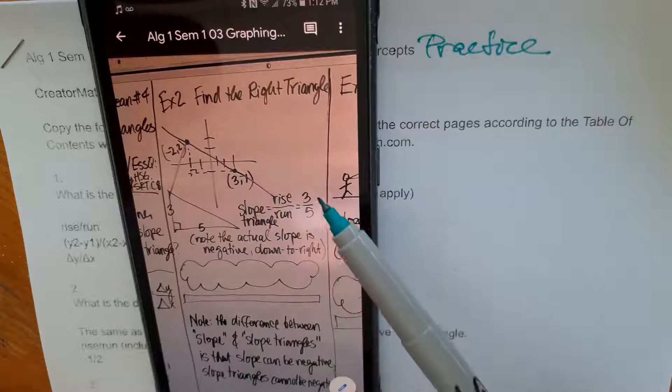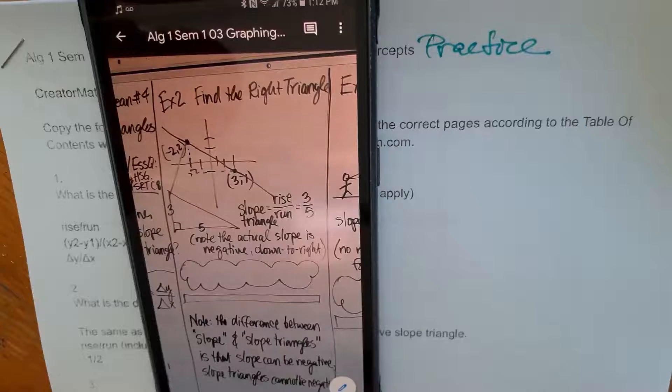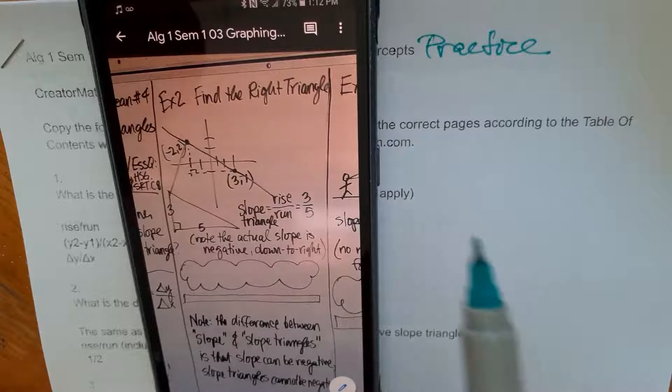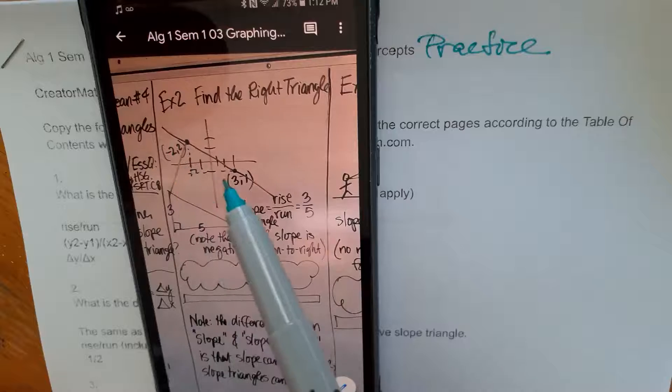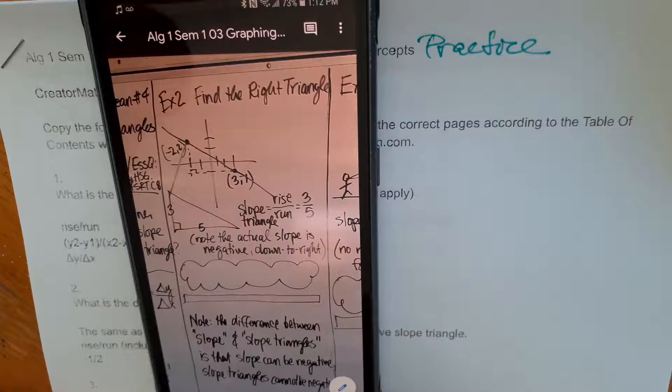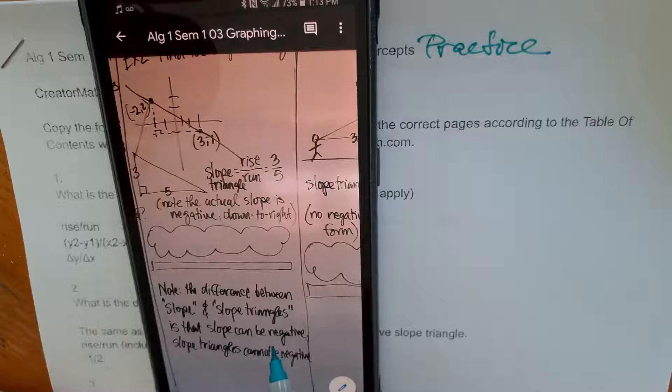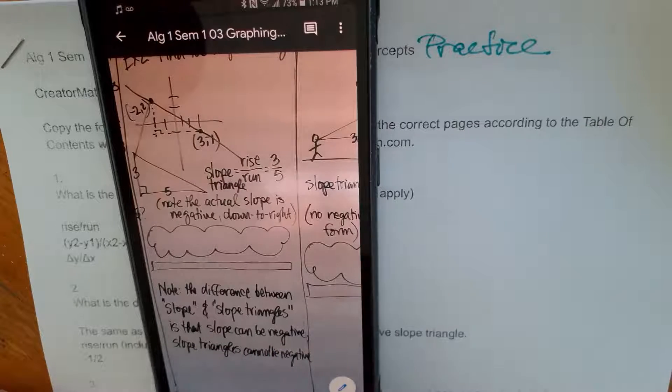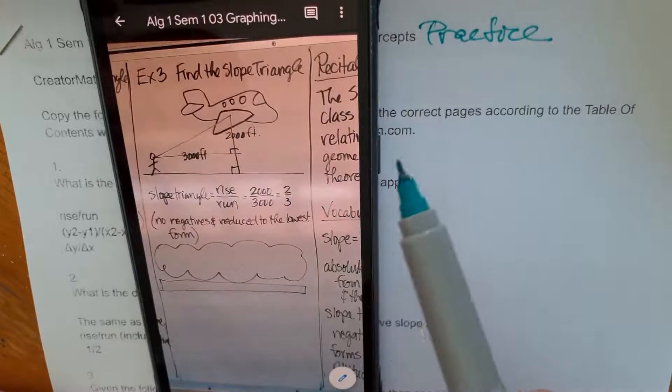So 3 over 5, but there is no negative here because it's a slope triangle, not a slope. But nonetheless the right triangle helps us to envision what is going on here and that is a direct link. We'll do slope triangles again in geometry because of the right triangle. Note the difference between slope and slope triangles is that slope can be negative. Slope triangles cannot be negative. So an interesting play on how to understand slope a little bit better.